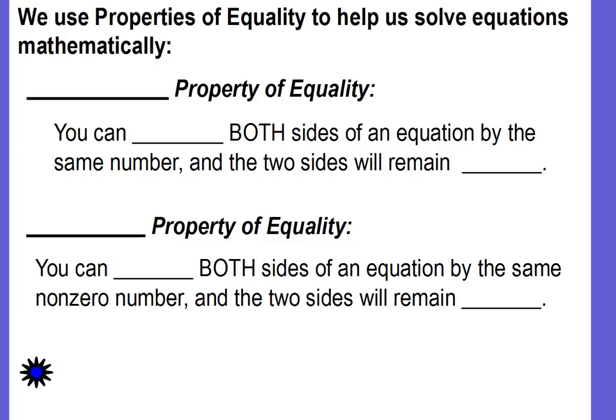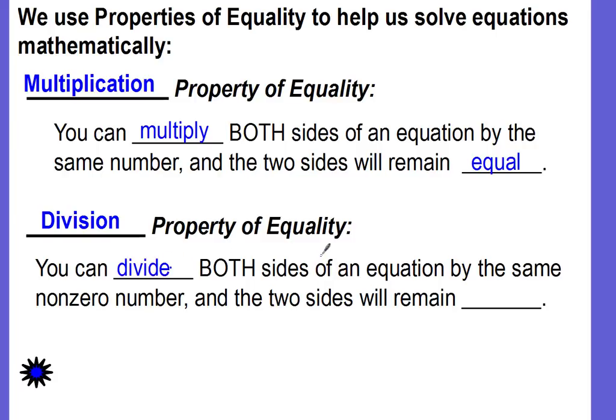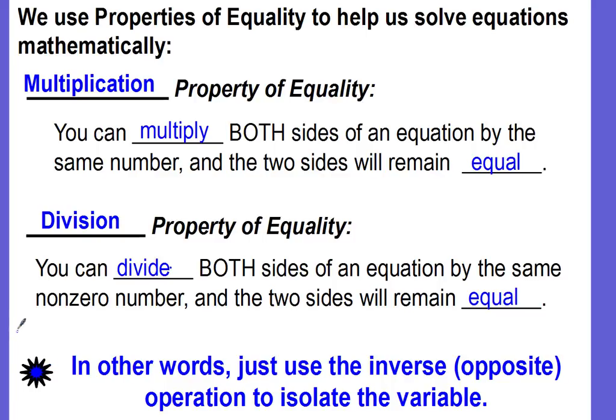Okay, we know that we can use the properties of equality to help us solve equations mathematically. We've already used the addition and subtraction properties of equality. Well now, we're going to use the multiplication property of equality, which says that you can multiply both sides of an equation by the same number and the two sides will remain equal. And also the division property of equality, which says that you can divide both sides of an equation by the same non-zero number. Remember, you cannot divide by zero and the two sides will remain equal. In other words, we're just using the inverse or the opposite operation to isolate the variable.